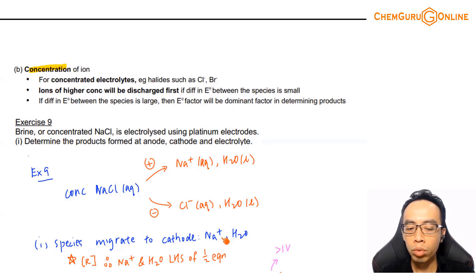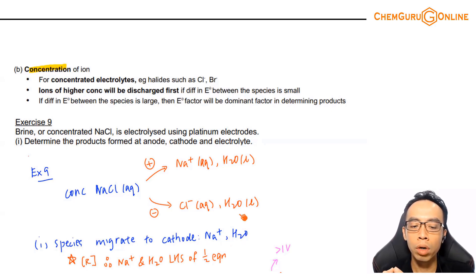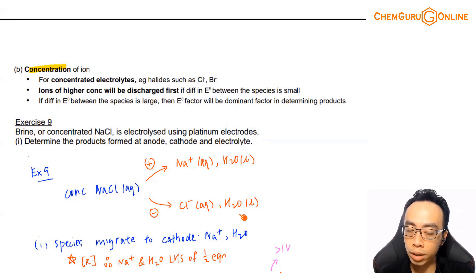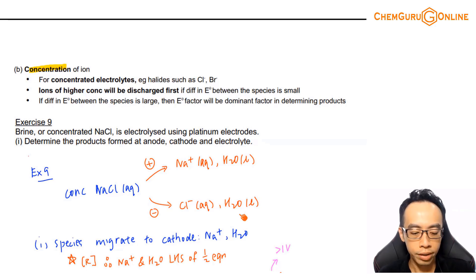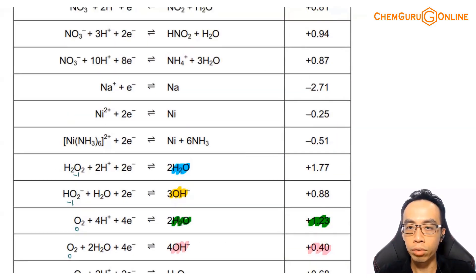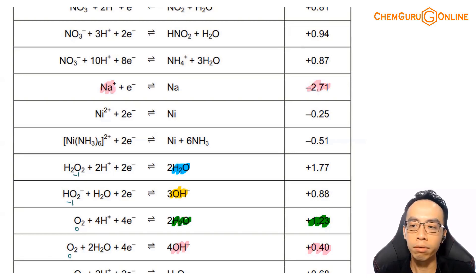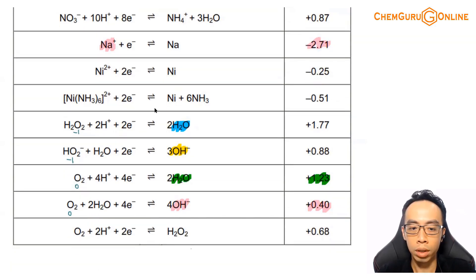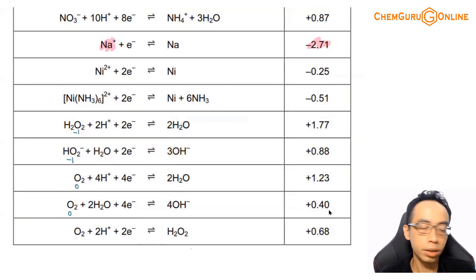Species migrating to the cathode — we have to consider Na⁺ and water. For reduction, the species must be found on the left-hand side of the half equation. So we look for Na⁺ on the left-hand side, and we look for water on the left-hand side. Na⁺ on the left-hand side gives us only one entry: minus 2.71V. Just copy this whole thing down — very straightforward.